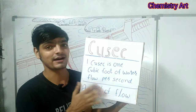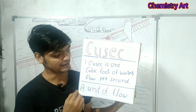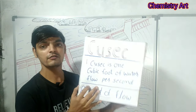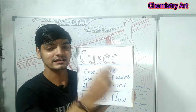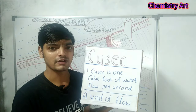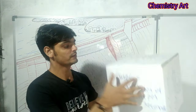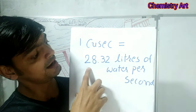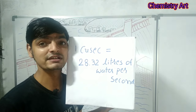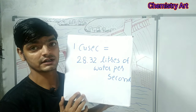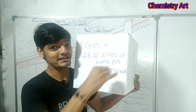I have made a cube at home. Here you can see this cube — the edge length is 30 centimeters, which means one foot. So one QCF means this much water — one cubic foot — is flowing every second. One QCF equals 28.32 liters of water per second. So if someone says one QCF water is flowing, it means 28.32 liters of water is flowing every second.